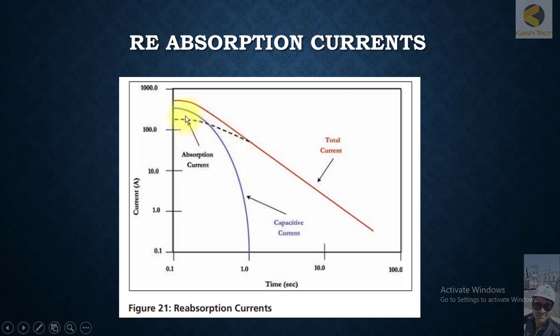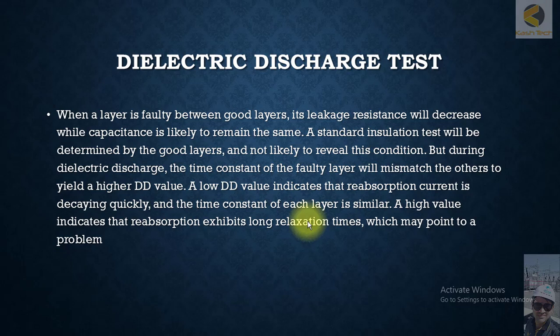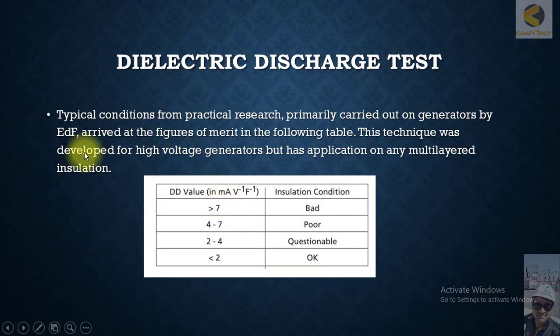Here is the reabsorption current — you can see the absorption current, the total current, and the capacitive current. After some time, the capacitive current has decreased, but the absorption current is still there and will take much longer to decay. You can consider different layers as different capacitors connected together. If all capacitors are healthy, you will get fast discharge and fast decay. But if one of the capacitors — one layer — is not healthy, then the discharge will be slower, meaning that one layer of the insulation is not healthy.